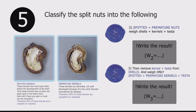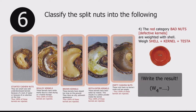To find the quantity of premature and spotted nuts, first weigh the quantity of spotted and premature nuts plus the shells — we call this weight W2. Next, weigh the quantity of spotted and premature canals only, and record this weight as W3.